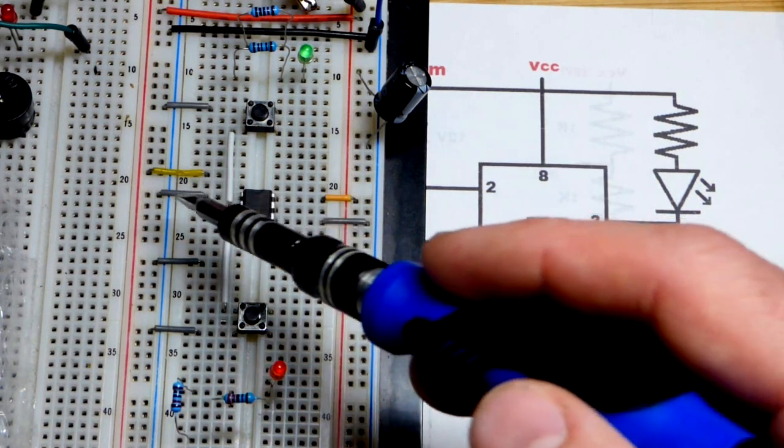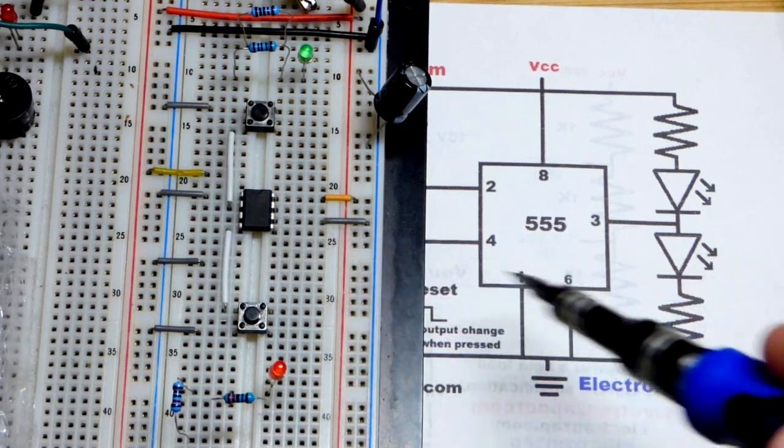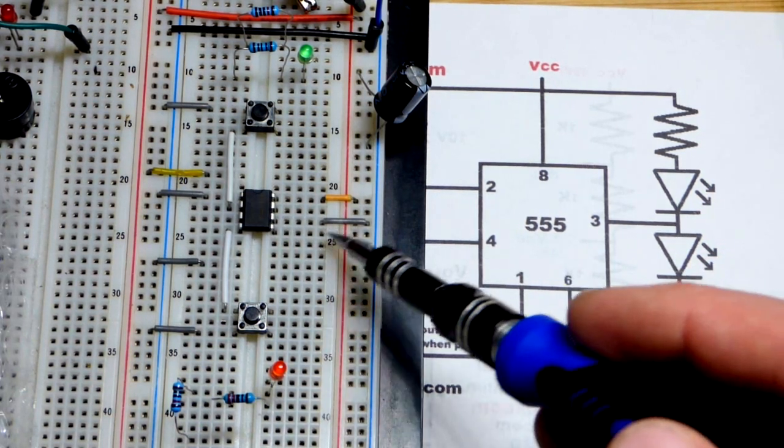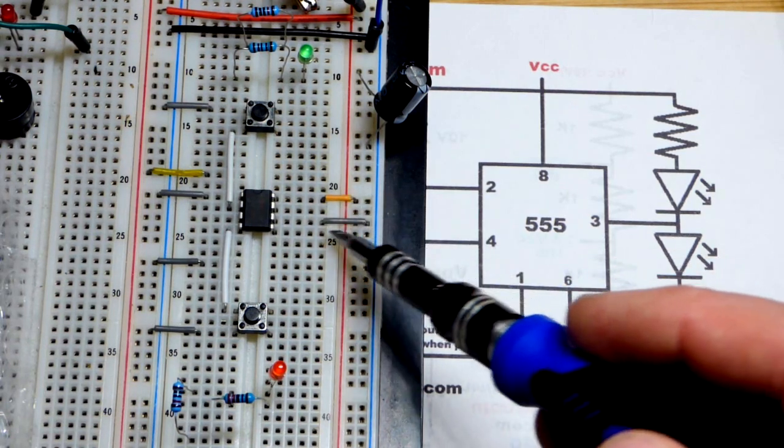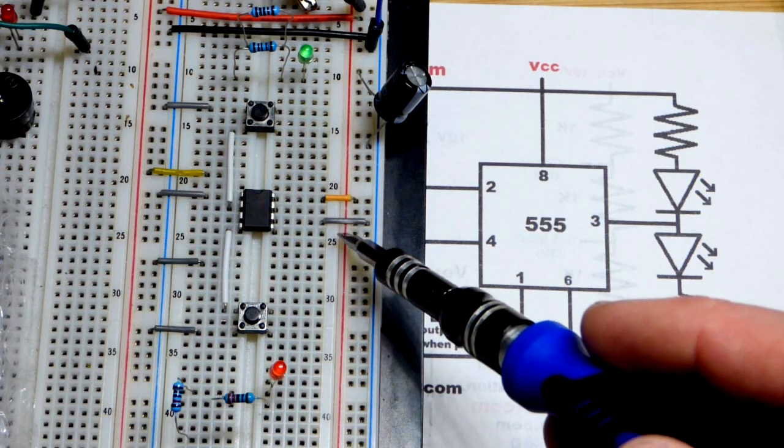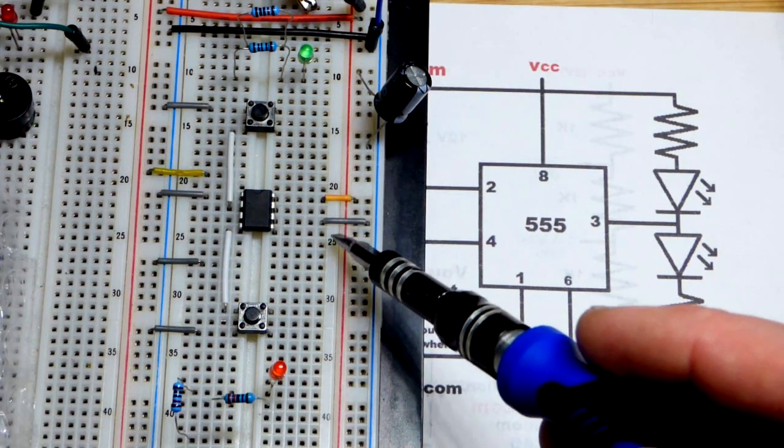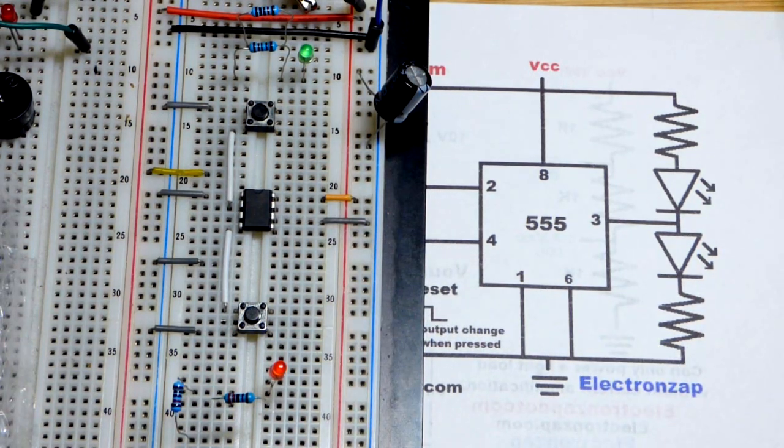We got VCC to pin 8 and ground to pin 1 right there. That's how you always power the 555 timer. Pin number 6 right here goes to the negative rail. It's actually waiting for two thirds or more of the supply voltage. By going to the negative rail that's zero volts, that's less than a third, so it's a lot less voltage than it needs to do something. So it doesn't do anything - we're telling it not to do anything.